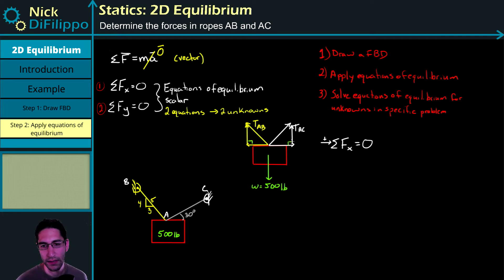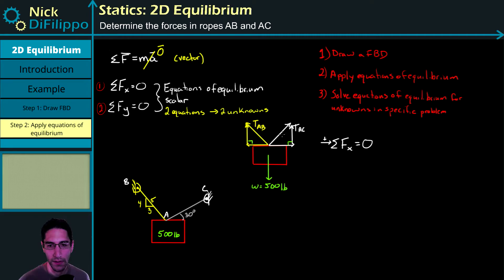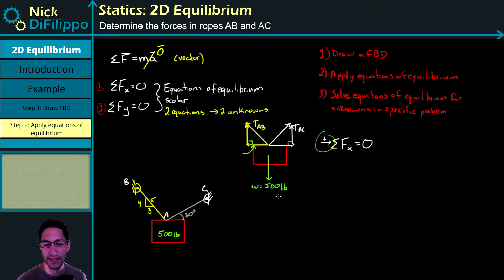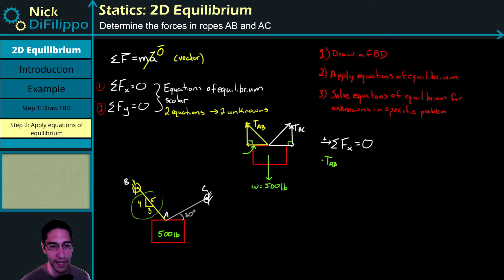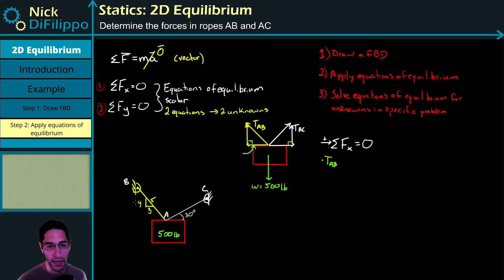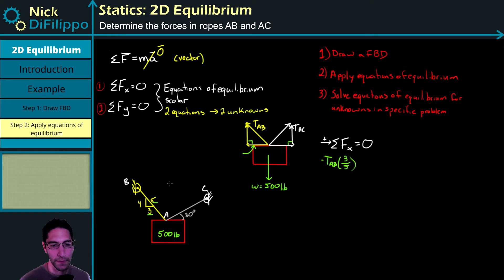We have right triangles. TAB uses a 3-4-5 similar triangle, so its x-component is −TAB × (3/5). For TAC, given at 30 degrees, the x-component uses cosine since it's the adjacent side. TAC points to the right, so it's positive: +TAC × cos(30). That gives us the sum of forces in x: −TAB(3/5) + TAC·cos(30) = 0.